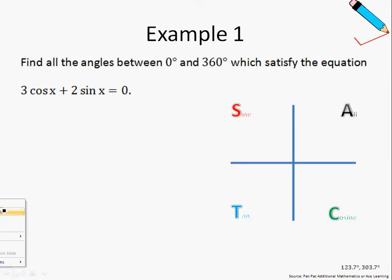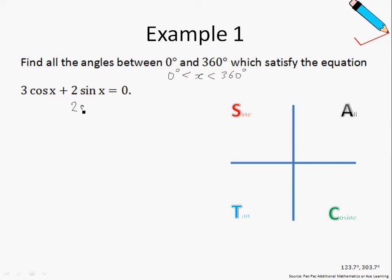This means that our x has a range of 0 to 360 degrees, so we only want x that is within this range. The first step will be to shift 3 cos x to the right-hand side of the equation, giving us the expression equal to negative 3 cos x.